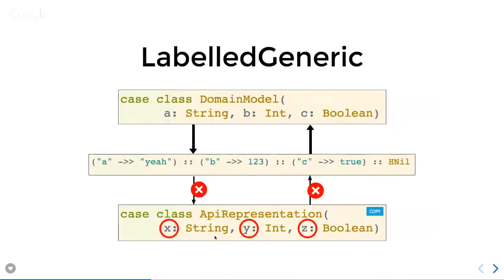Generic is one of the simplest things you can do in Shapeless, but there's a variant called LabeledGeneric. The difference is that now we care about what the field names are. Instead of just being a String, an Int, and a Boolean, we now care that they're called A, B, and C — we record that information. That means we can no longer convert between APIRepresentation and this generic representation if the field names don't match. Depending on your use case, this can be more useful than Generic.